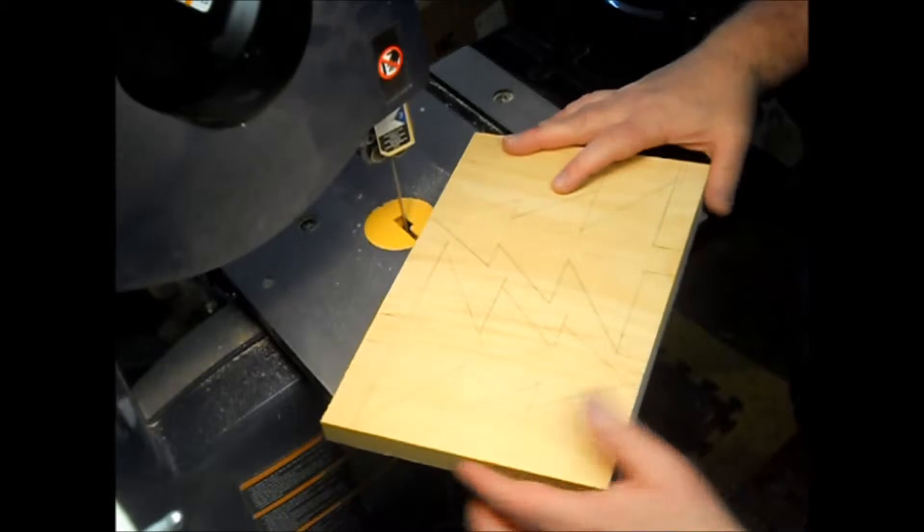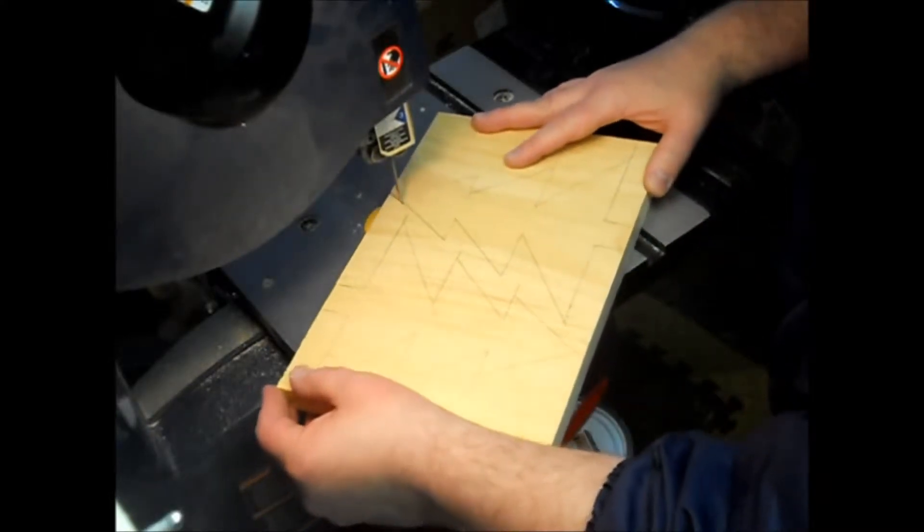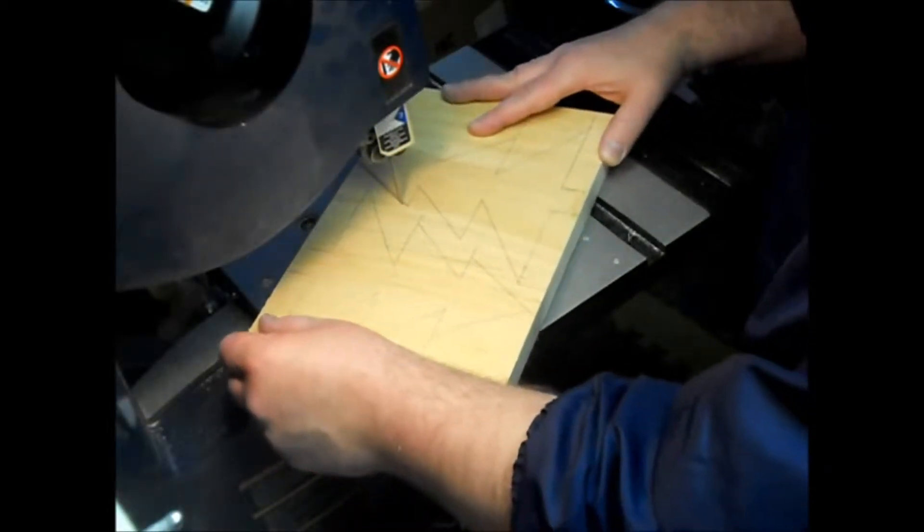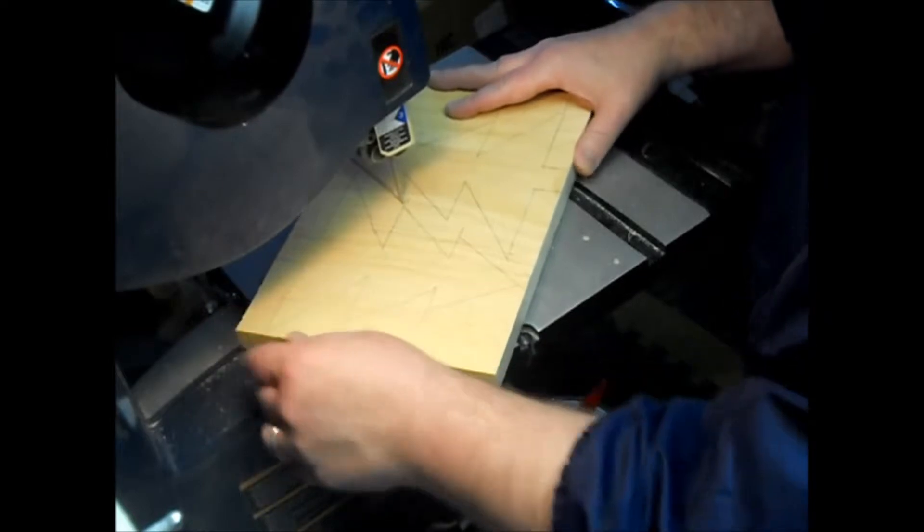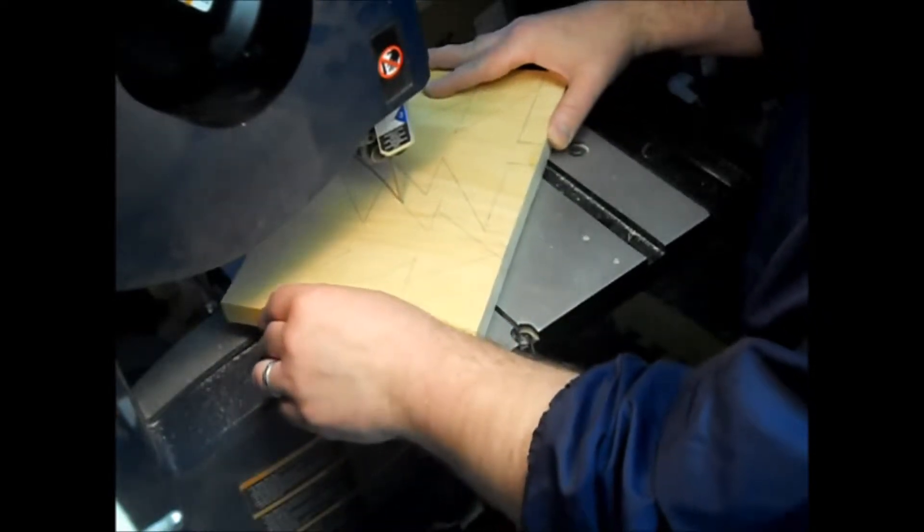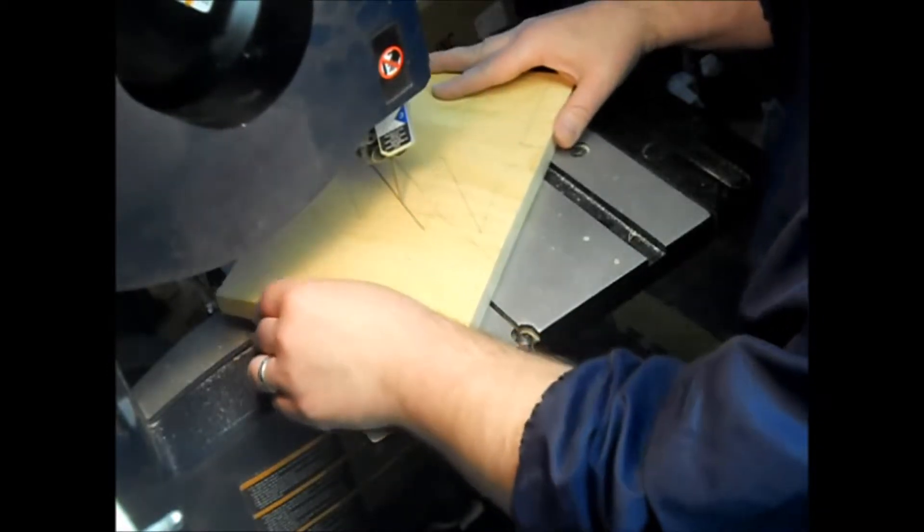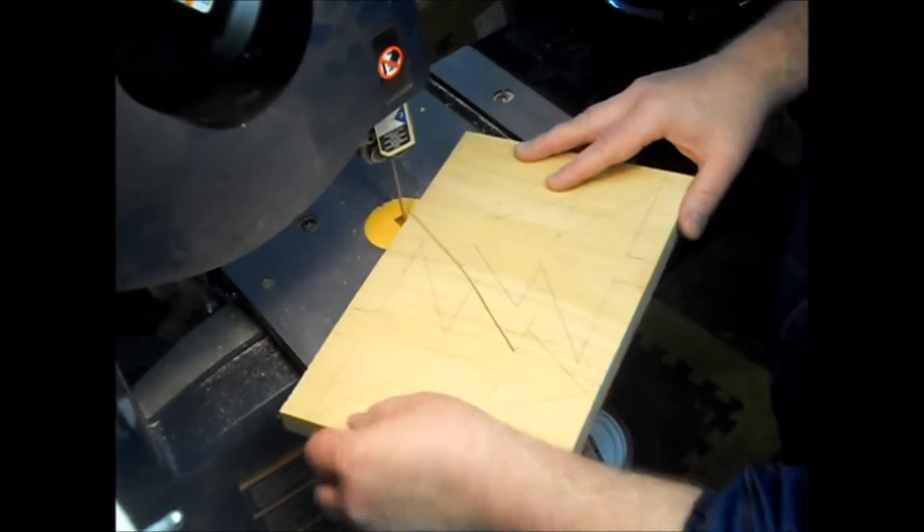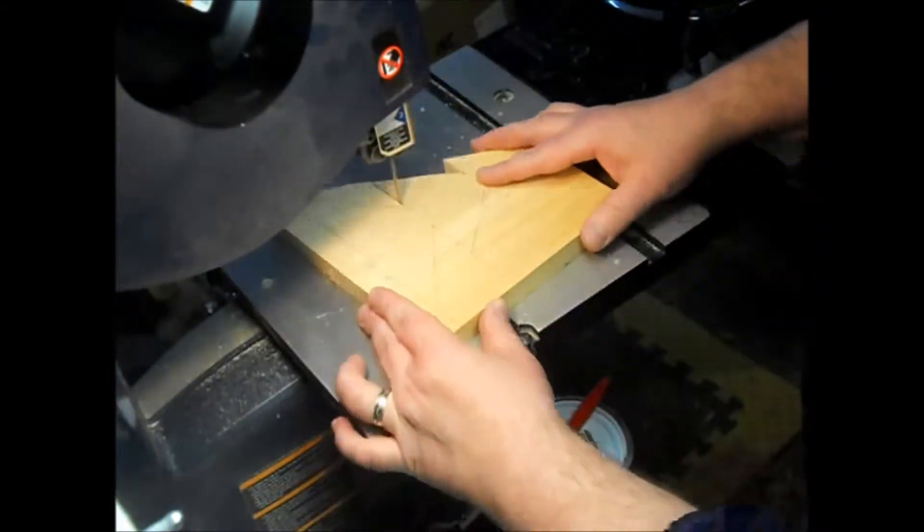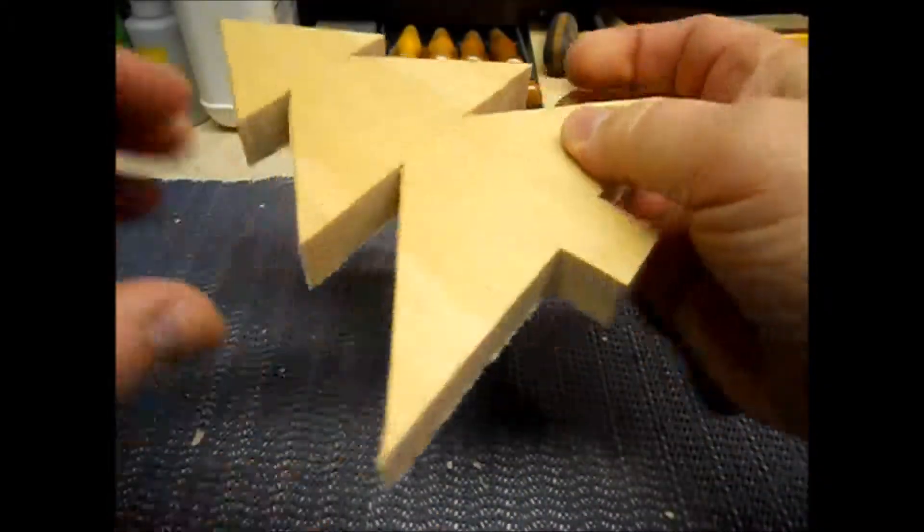Here you can see that I actually drew out two copies of the tree. I guess this is the start of a small forest. Here's the tree blank ready for carving.